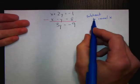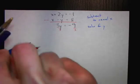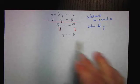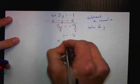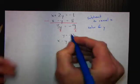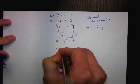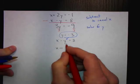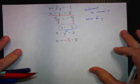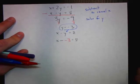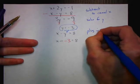Now we've subtracted to cancel x. We divide both sides by 3 and find that y equals negative 3. Now we have a value for y — all we have to do is find a value for x. I'm going to use the second equation. I know y equals negative 3, so I have x minus y, and y is negative 3. I have to be careful with signs — I have x minus negative 3.